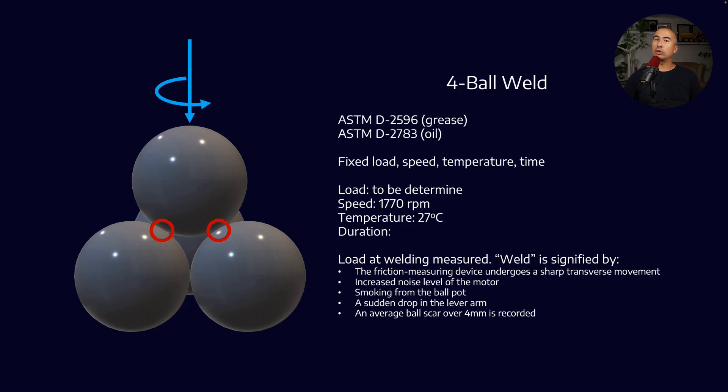Then you have the four ball weld test. And we're using the same apparatus, but we're using a slightly different speed and temperature. And this time, we're not going to define the duration because we are increasing the load until we see welding between the balls. Now welding is defined in a few different ways according to the test. So maybe we see a sharp movement. Maybe we see a lot of noise at the motor. Maybe we see smoking from the ball pot.